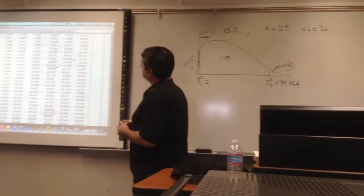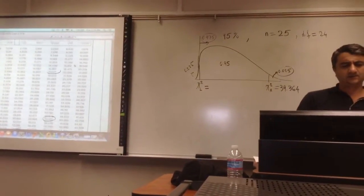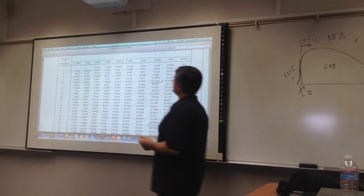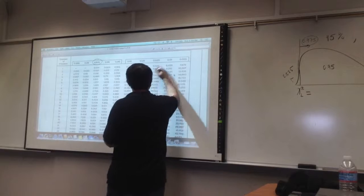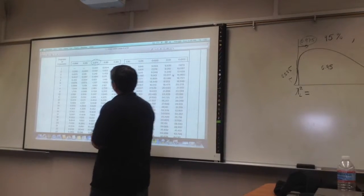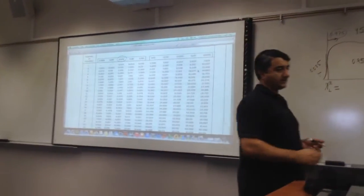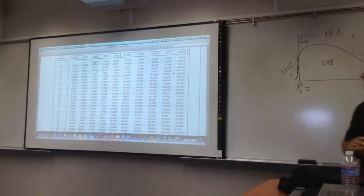So locate that in the table and read the chi-square for that. So what is that? This is the row we're going to look for. Agree? So what is that? We go to 24 and we read the critical value which is the .025. So what is the value?